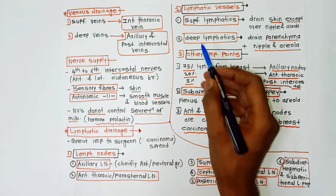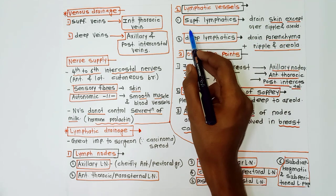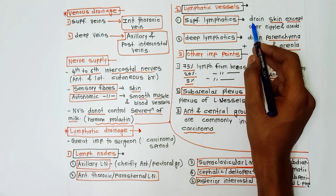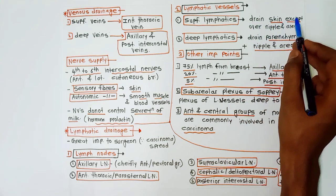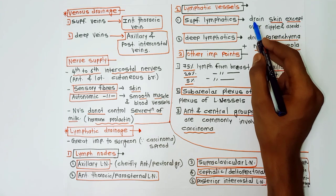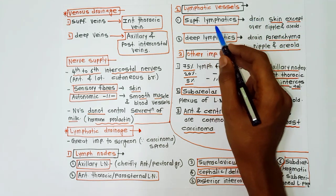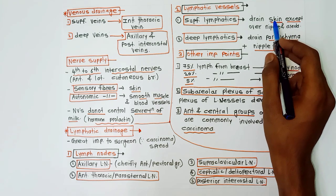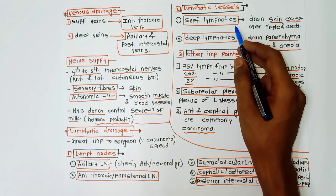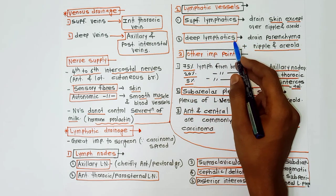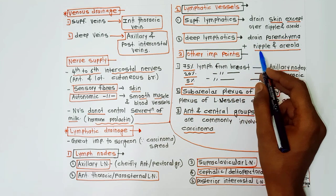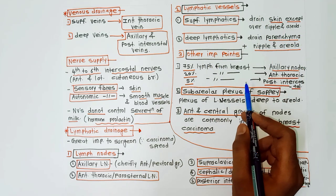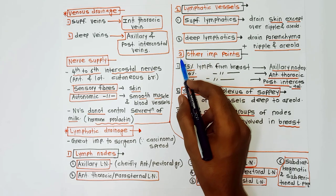For lymphatic vessels, we have superficial lymphatics and deep lymphatics. Superficial lymphatics drain the skin of the breast, except over the nipple and areola. Deep lymphatics drain the parenchyma and the nipple and areola, which are not covered by superficial lymphatics.